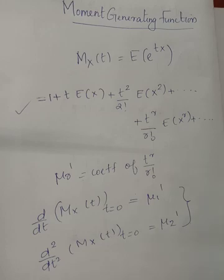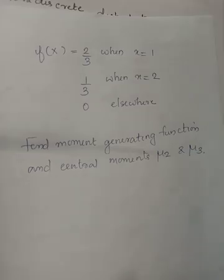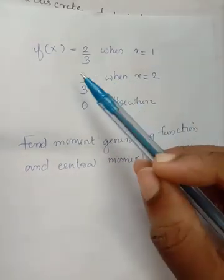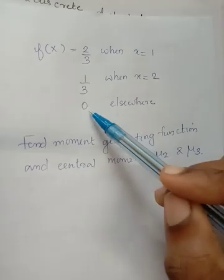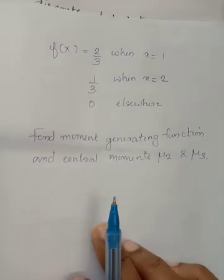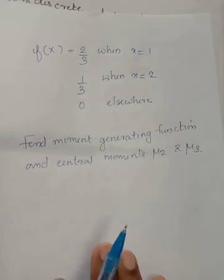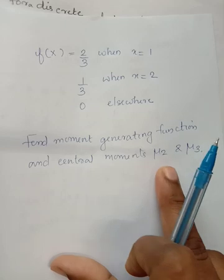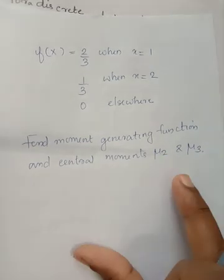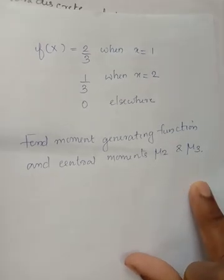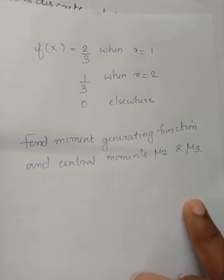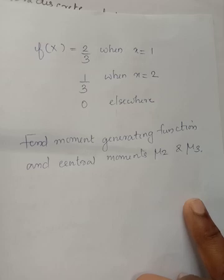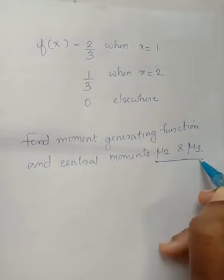Let's try to calculate a problem. With a given probability density function where x takes values 1 and 2, find the moment generating function. Using that value, we want to calculate the central moments mu2 and mu3. We have a formula for the raw moments using the derivative set equal to 0. From the raw moments and the relationship between raw moments and central moments, we calculate mu2 and mu3.